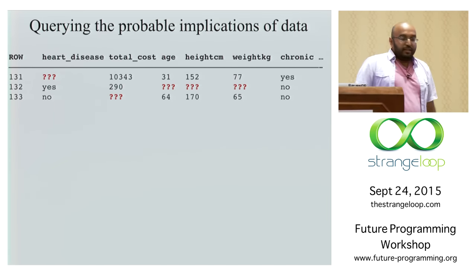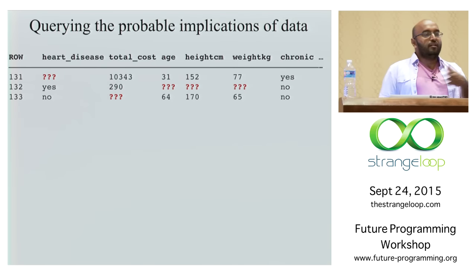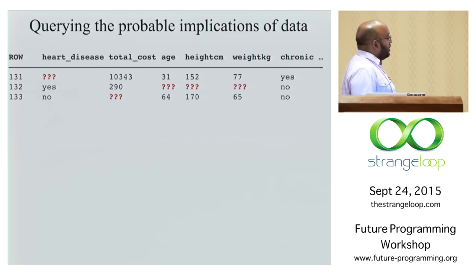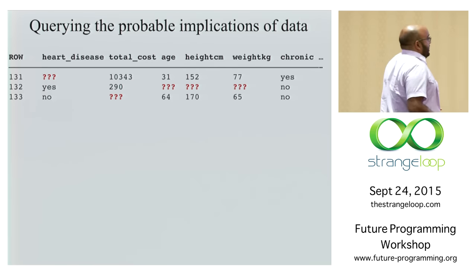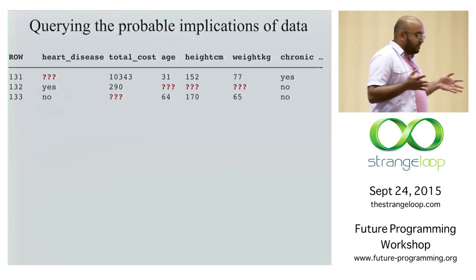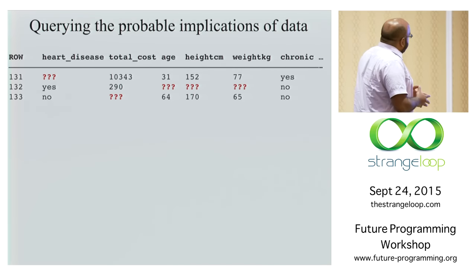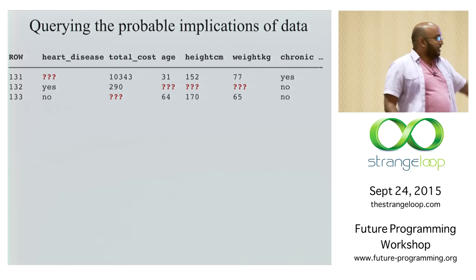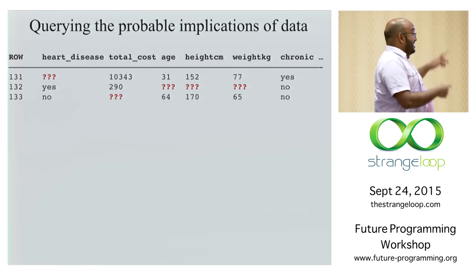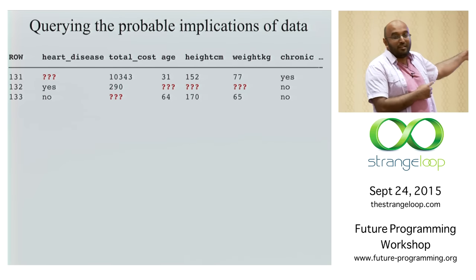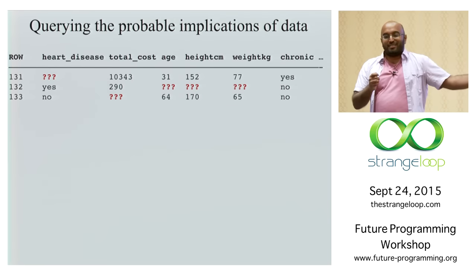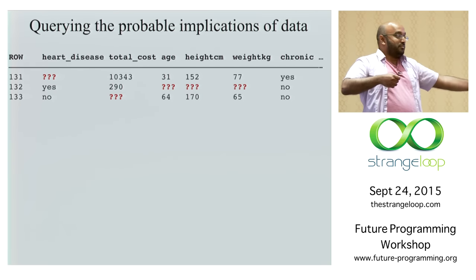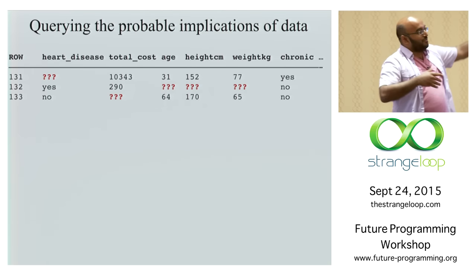Let's dive in a little bit more into BayesDB. BayesDB is a probabilistic programming system that aims to make it as easy to query the implications of your data as SQL lets you query the data. The first thing we need to understand is the difference between information and data. Here's a data table of patients — at least it's a table of measurements I'm claiming are about patients. For me to call it data about patients, I'm making some modeling assumption, perhaps treating each row as a random sample from some process producing patients. There's some active modeling involved in calling it data.